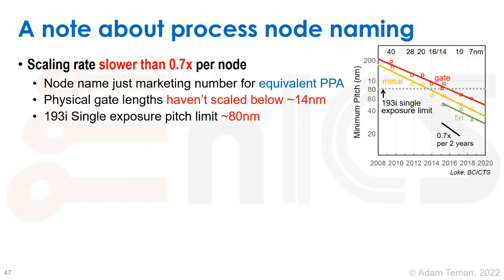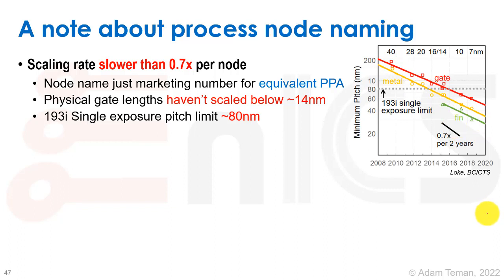Scaling has traditionally been slower than 0.7x per node — this is the Moore's Law curve of 0.7x per two years. This is the actual scaling of the pitches. It's pretty amazing because this is the single exposure limit, which is around 80 nanometers of 193 nanometer laser. Now we've gone over to EUV, which gives us a real benefit. But this is how the pitches have been scaled. We've actually stayed at about 14 nanometer physical gate lengths for a long time — we haven't gone under them. The node naming is really just a marketing number, giving us an equivalent power-performance-area type of a name.